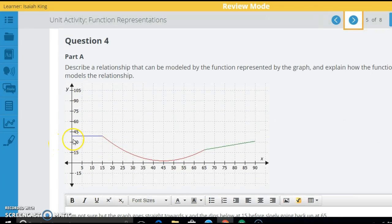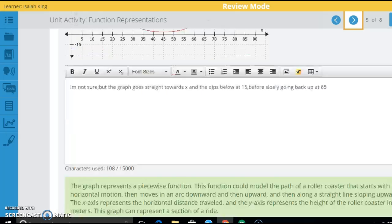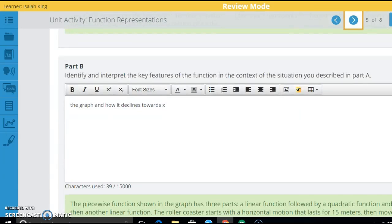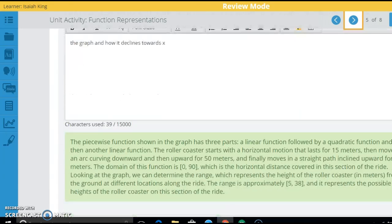Same thing here. This is a piecewise function. But what's happening? And what could this graph represent? A lot of people choose roller coaster. I'll just tell you that right now. So you can use that as your example. And then, same exact thing. Identify and interpret key features.